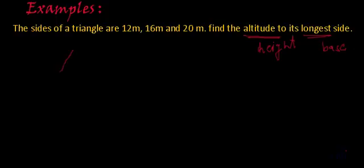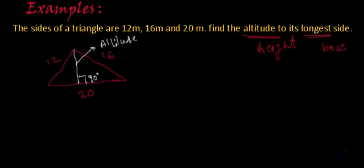Suppose this is the triangle, where this is 12 meters, this is 16 meters and this is 20 meters. So here 20 meters is the longest side and if I draw a perpendicular from this point to this base, that means this angle is 90 degrees. Then we have to find the length of this white line and this is called altitude or sometimes we also call it height. So very clear what we have to find?